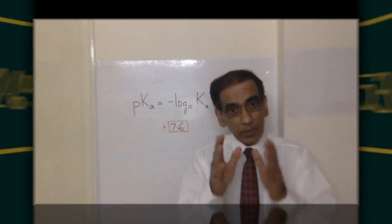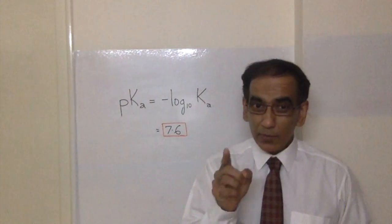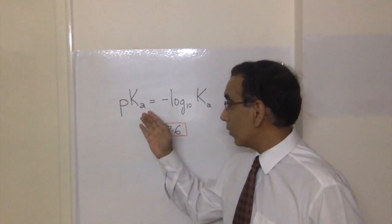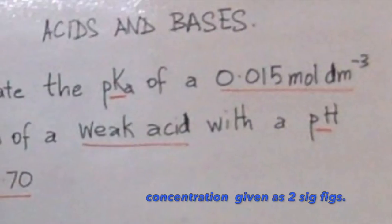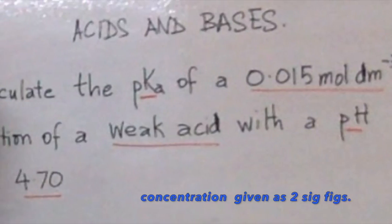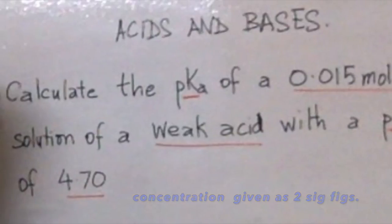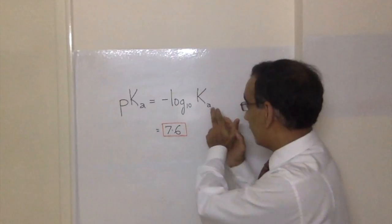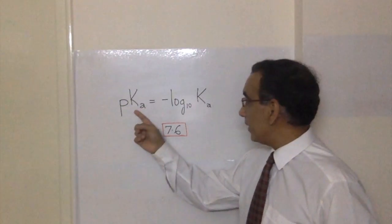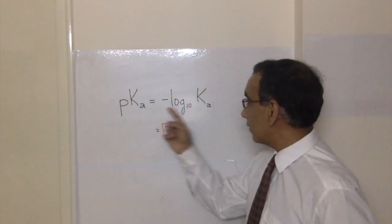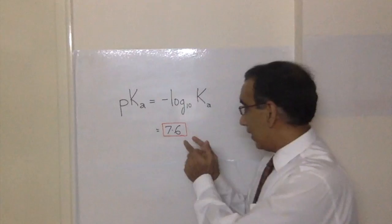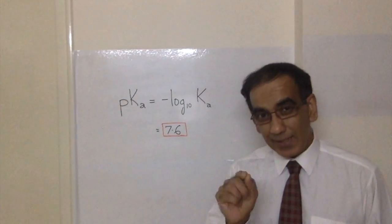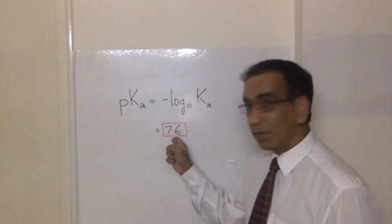We must recall that the question requires us to find the pKa of this weak acid. To do that we need to plug in the value that we got for Ka into this relationship: pKa is equal to the negative log to the base 10 of Ka. The answer rounded to two significant figures in keeping with the negative log to the original data provided is 7.6.